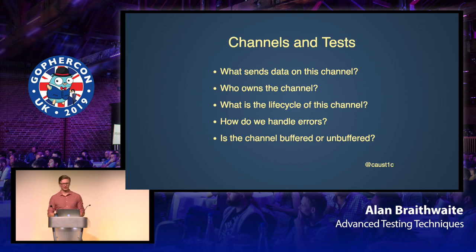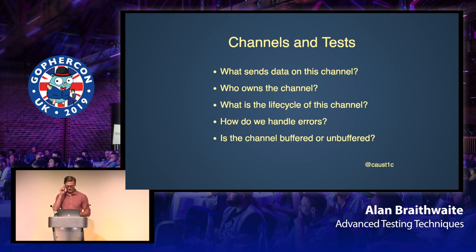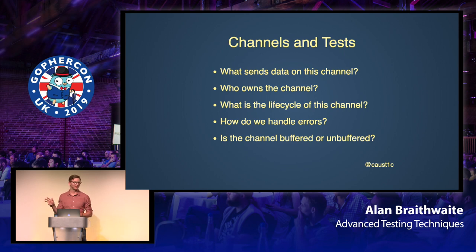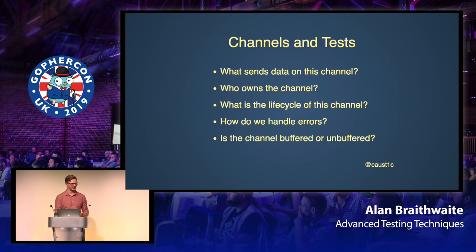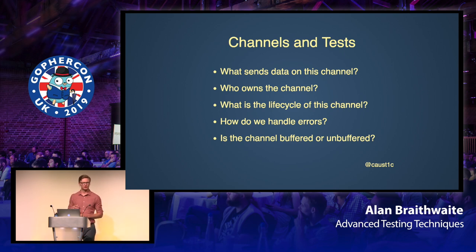During research for this talk, I found only four examples in the standard library that exported channels in a meaningful way — not counting reflect or runtime. Those were net/http for cancellation, signal for notifications, and time, which provides notifications with a data component that is the time object. These are very simple, well-defined, well-documented APIs and are a good example of the exception to this rule. But in general, I think you should try to avoid exporting channels from your library.